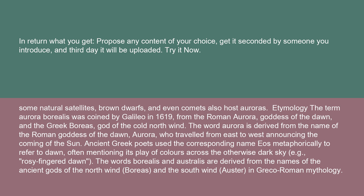The term aurora borealis was coined by Galileo in 1619 from the Roman aurora, goddess of the dawn, and the Greek boreas, god of the cold north wind. Ancient Greek poets used the corresponding name eos metaphorically to refer to dawn, often mentioning its play of colors across the otherwise dark sky, e.g. rosy-fingered dawn. The words borealis and australes are derived from the names of the ancient gods of the north wind, boreas, and the south wind, auster, in Greco-Roman mythology.